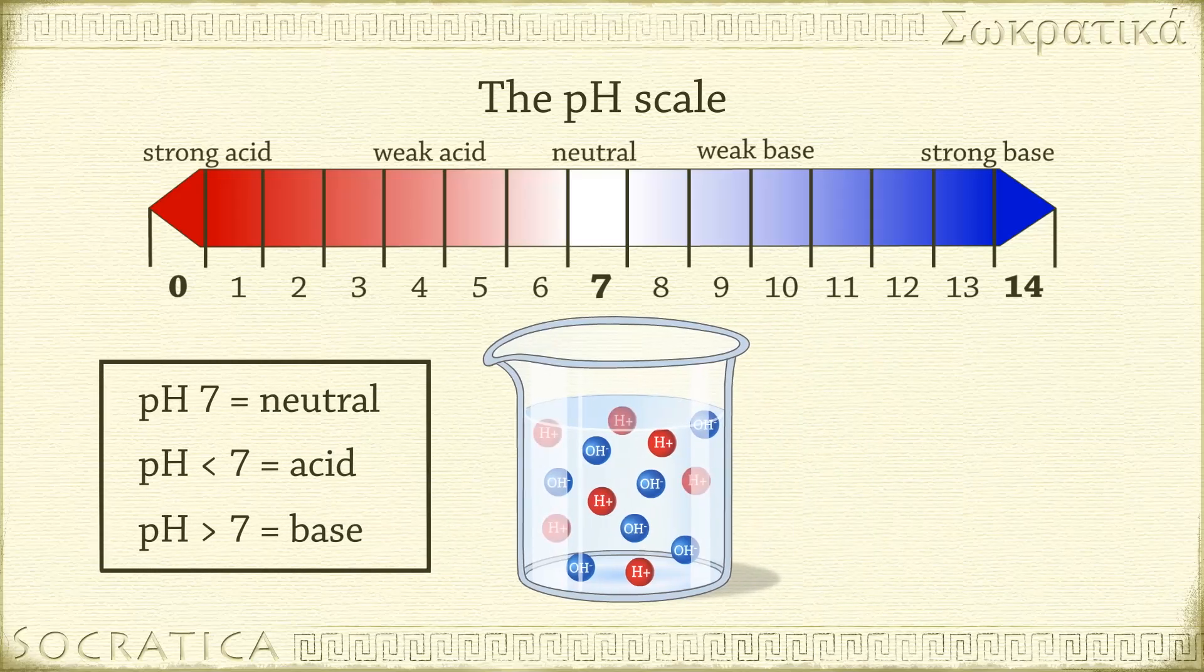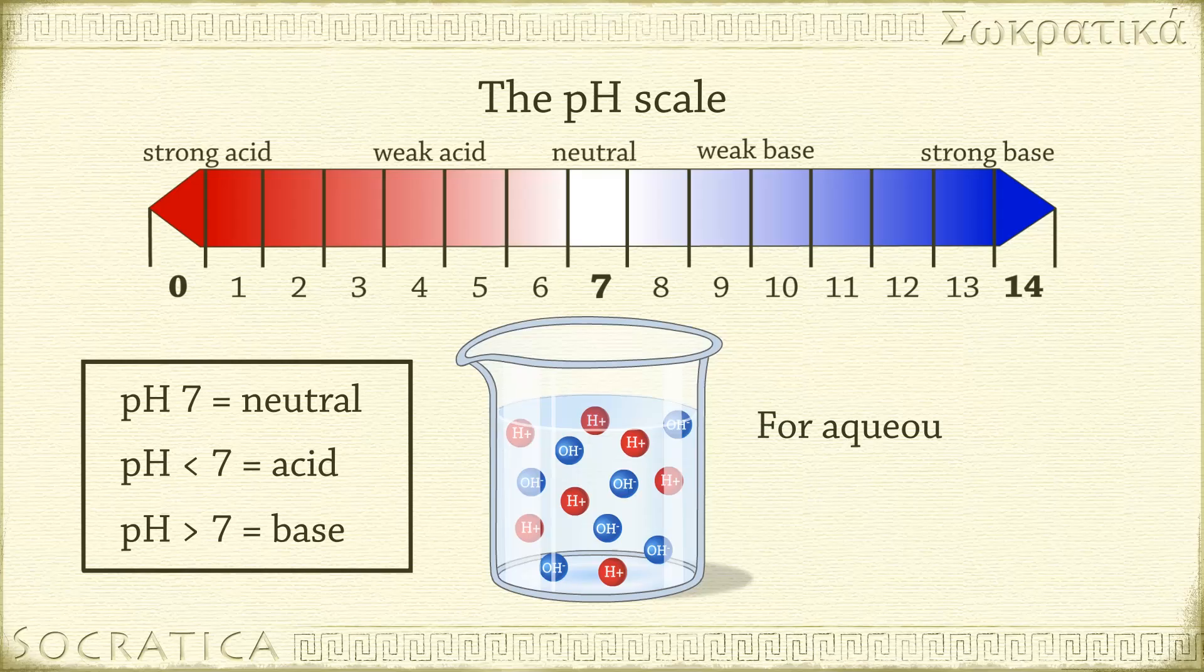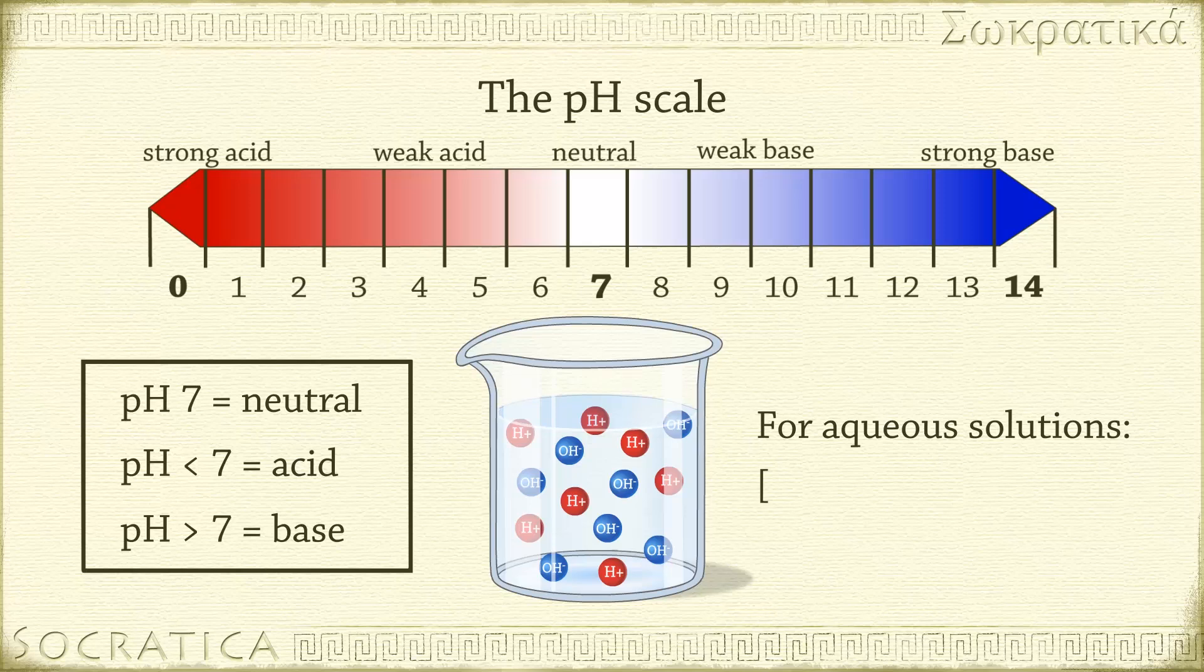We can express this mathematically. For aqueous solutions, the product of H+ and OH- ions is a constant. The concentration of H+ ions times the concentration of OH- ions equals 1 times 10 to the negative 14.